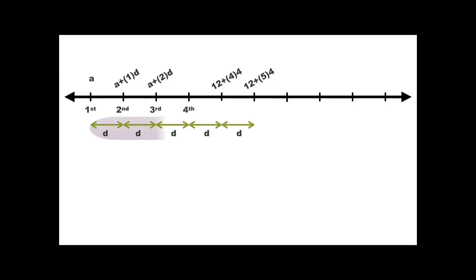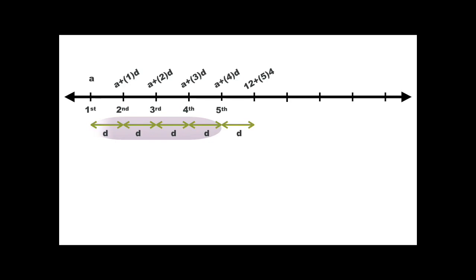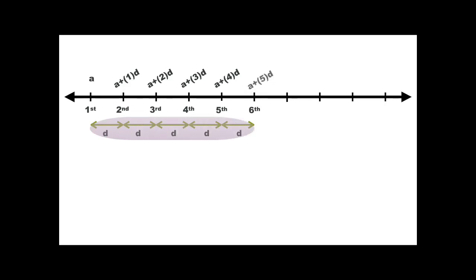Similarly, my fourth term will be A plus 3 times D, the fifth term will be A plus 4 times D, and the sixth term will be A plus 5 times D. The list goes on in a similar pattern.